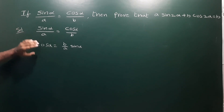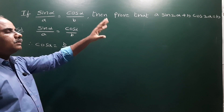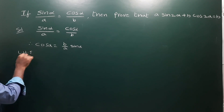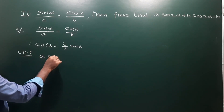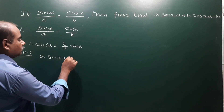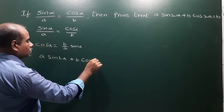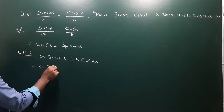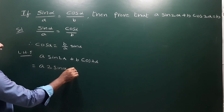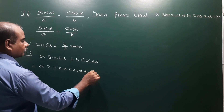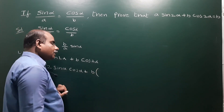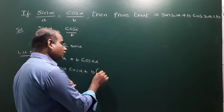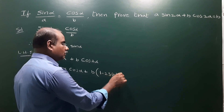From this we have to find the value of cosα and then substitute it into our LHS. So our LHS is a·sin2α + b·cos2α, which equals a into sin2α — using the formula 2sinα·cosα — plus b into cos2α, writing cos2α using the formula 1 minus 2sin²α.